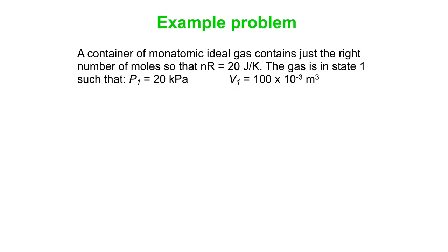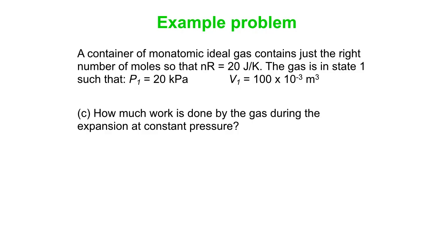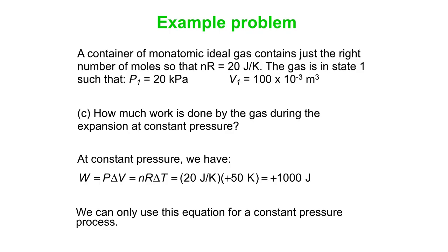Now, how much work is done by the gas during that expansion? That was part of our Q expression. So constant pressure, we know work is P∆V. Again, you can replace P∆V because of the ideal gas law by nR∆T. You can really only get away with that because only one thing is changing on the left-hand side. And so that's 20 joules per Kelvin times 50 Kelvin is 1000 joules. Remember, you can only use work is P∆V for the constant pressure process. In general, we have to say work is the area under the curve on the PV diagram for that particular transition from one state to another for that particular process.